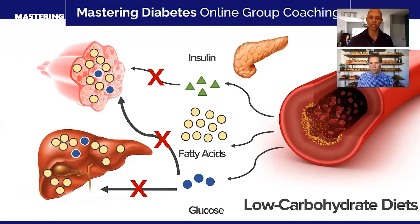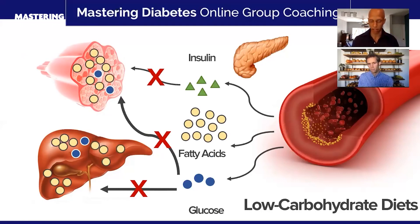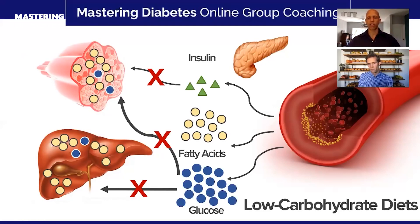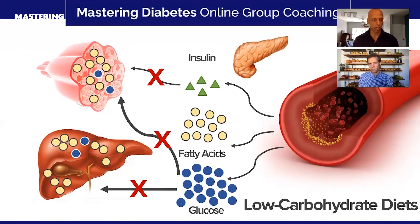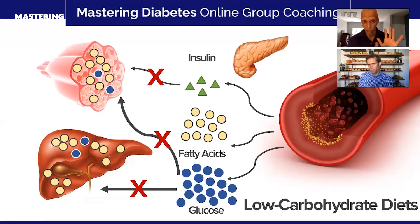Glucose does get inside of your liver and muscle, but only in small amounts, not in very large amounts. As a result of that, glucose ends up getting trapped in your blood and it starts to accumulate. It gets trapped in your blood, there's more glucose, you check your blood glucose, and you start to see higher numbers.